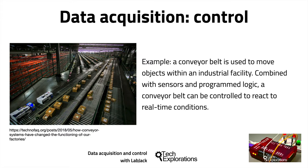Optical scanners and RFID readers are used so that the conveyor belt controller knows exactly where a specific object is. Motorized gates are then used to divert objects into alternative routes. All of this is done in a deterministic way so that the flow of products through the conveyor belt system is constant and the travel time for any of the thousands of objects on it is predictable within milliseconds. Modern e-commerce and manufacturing would not be possible without modern conveyor belt systems powered by modern data acquisition and control systems.